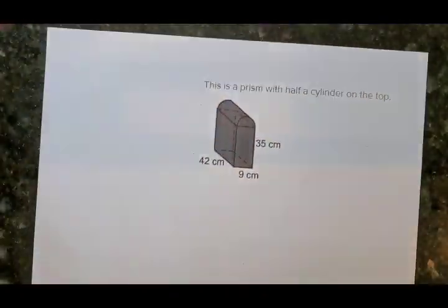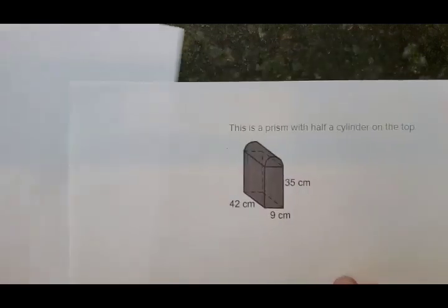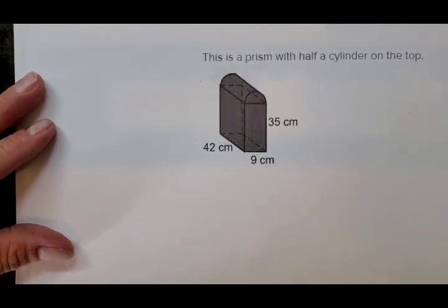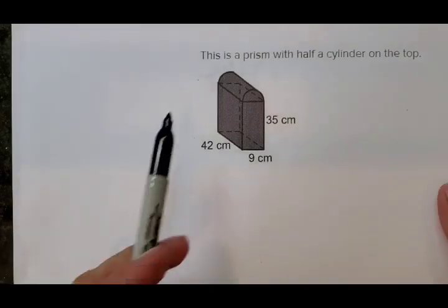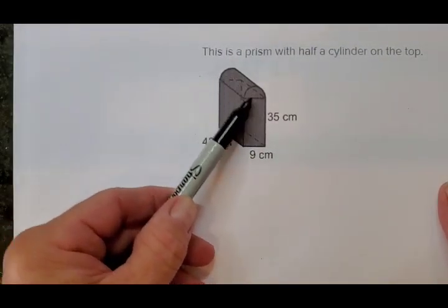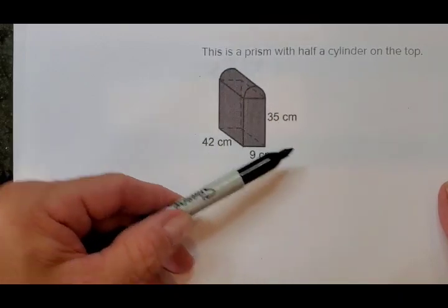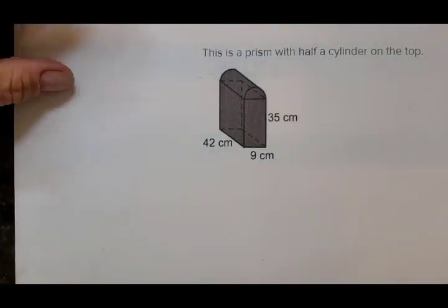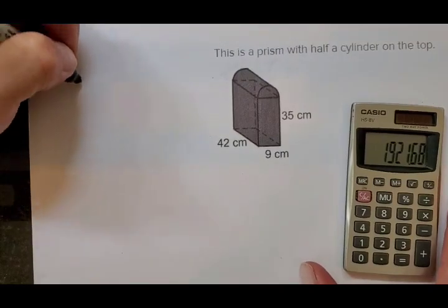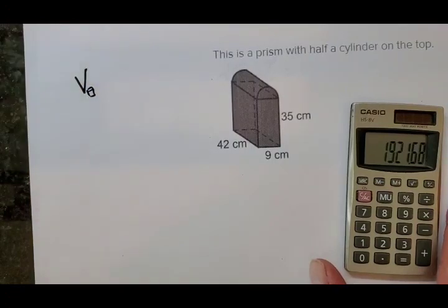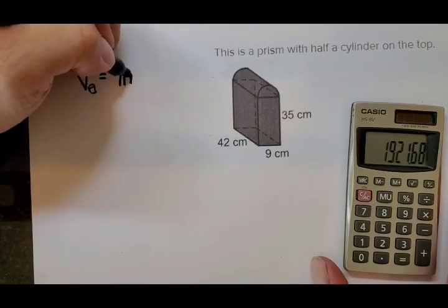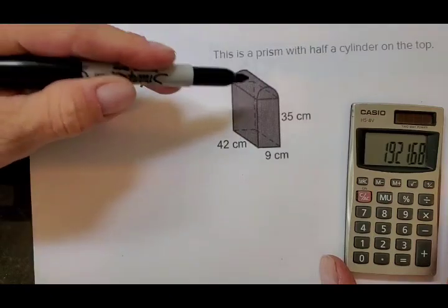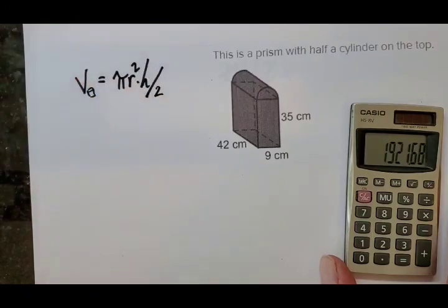One more example — I'll do this a little quicker. You have to assess what you're dealing with. Looking at this figure, we have a rectangular prism here, and then a cylinder that's been split down the middle — so it's a half cylinder. We're going to find the volume of each. I'll start with the volume of the half cylinder. Pi r-squared times height is the volume formula, but since it's a half cylinder, it'll end up being divided by two.